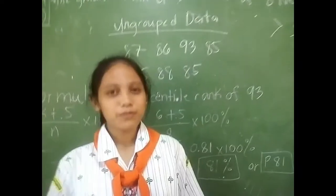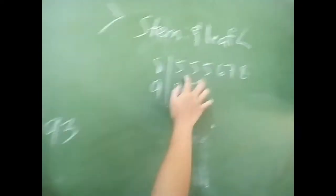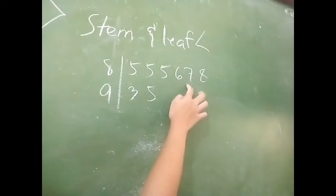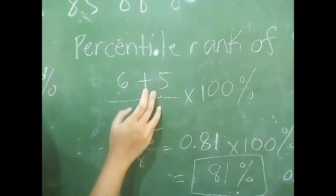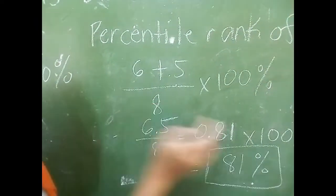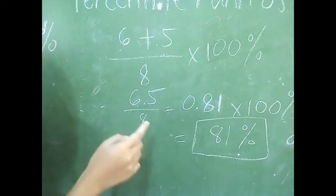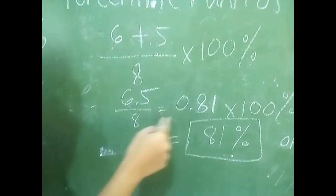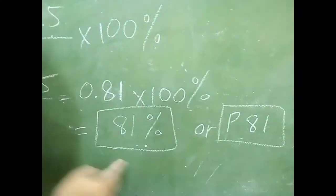Here's the last example for percentile rank of 95. Again, counting through: 1, 2, 3, 4, 5, 6, 7 plus 8. The preceding count is 6. So 6 plus 0.5, divided by 8, times 100%, equals 6.5 divided by 8, which equals 0.81 times 100%, so it would be 81%, or P81.